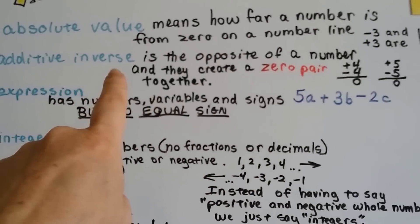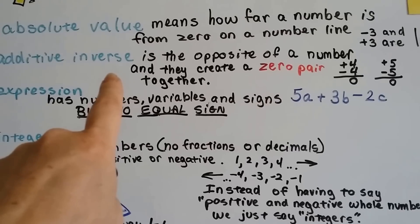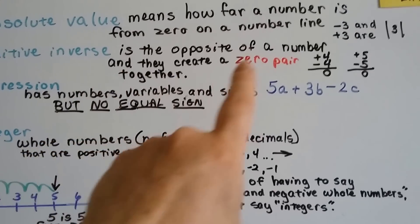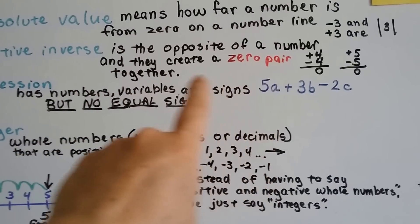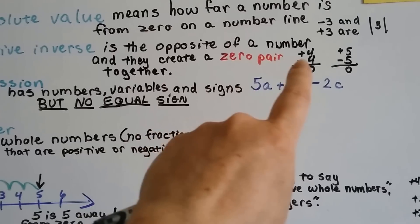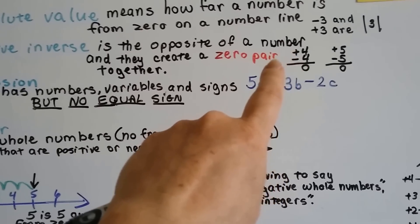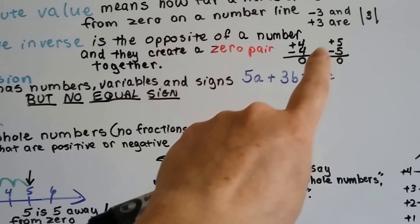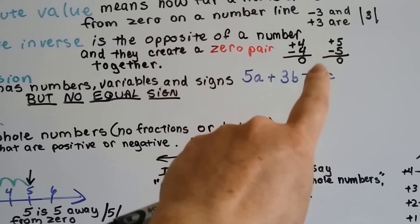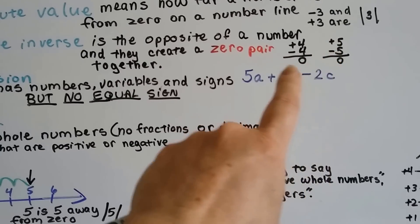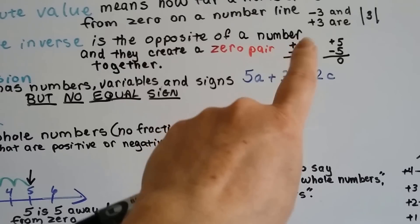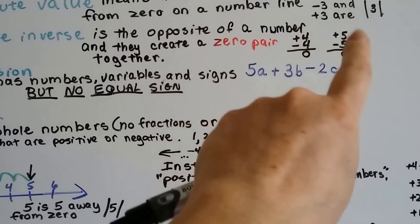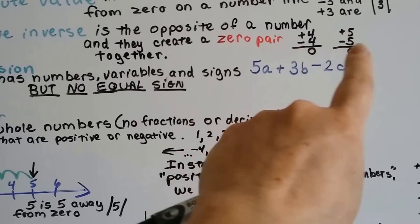An additive inverse is the opposite of a number, and together they create a zero pair. So if you have a positive four and you add a negative four, it makes zero. Or if you have positive five and negative five, it makes zero. That's an additive inverse — it cancels out the other number.